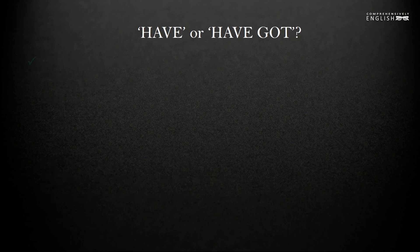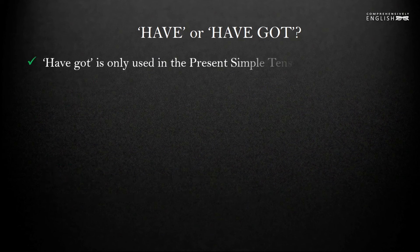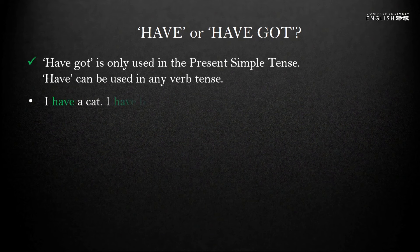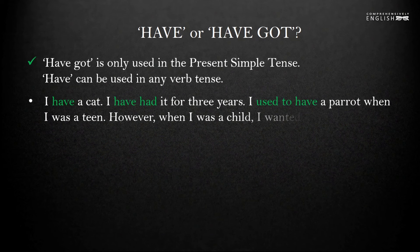Another difference is that have got is only used in the present simple tense, whereas have can be used in any tense. For example: I have a cat. I have had it for three years. I used to have a parrot when I was a teen. When I was a child I wanted to have a dog. In these sentences have is used in different tenses and different forms.